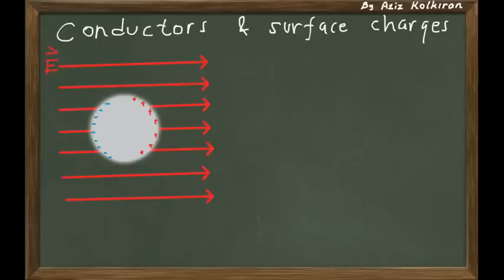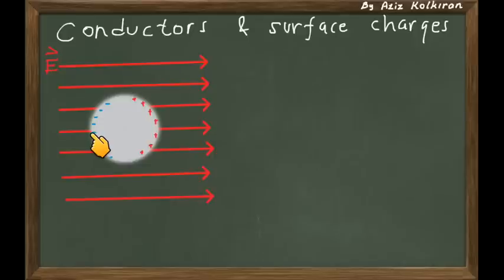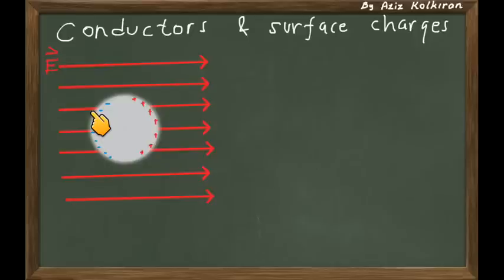The next question is how the electric field lines will change. Some of these electric field lines enter the metal perpendicularly. But at some other places, the electric field lines end on the surface not perpendicularly — they have some tangential component to the surface. If you have this tangential component on the surface, then the charges on the surface will experience an electric force.